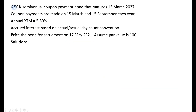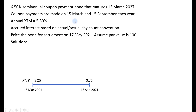Let's look at an example: a 6.5% semi-annual coupon bond maturing on 15 March 2027. Coupon payments are made on 15 March and 15 September each year. The annual yield to maturity is 5.8%, and accrued interest is based on the actual/actual day count convention. We'll calculate the price for settlement on 17 May 2021, between the two coupon dates of 15 March and 15 September 2021, with a par value of 100. The semi-annual coupon payment is 6.5% × 100 / 2 = 3.25.